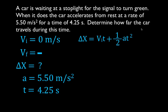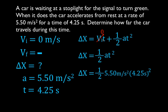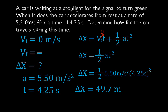Now, since the initial velocity is zero, the initial velocity times time is also zero, so we can simplify: the change in position equals one-half times acceleration times time squared. We know the acceleration and the time, so we fill in the values: one-half times 5.5 times 4.25 squared. The car traveled 49.7 meters during those 4.25 seconds. All we did was write down all five variables, identify the knowns and unknowns, figure out which equation to use, plug the values in, and get the answer with the correct units.